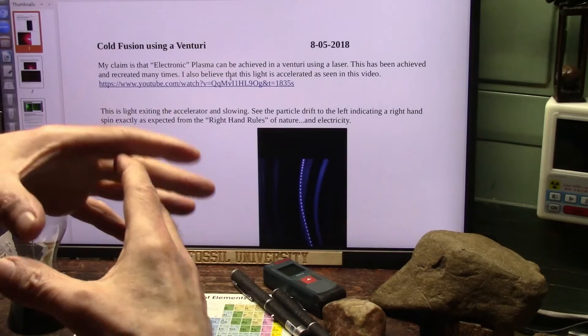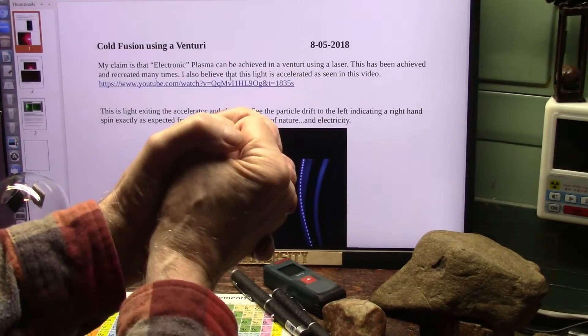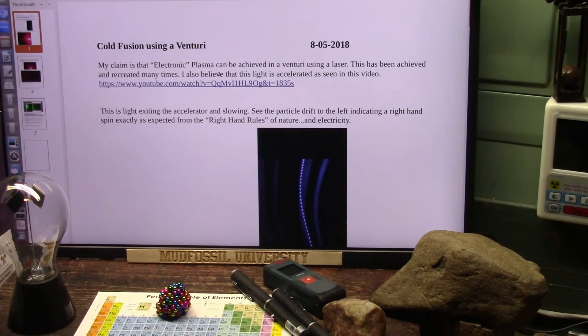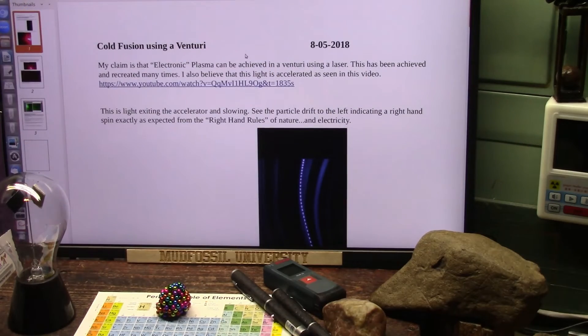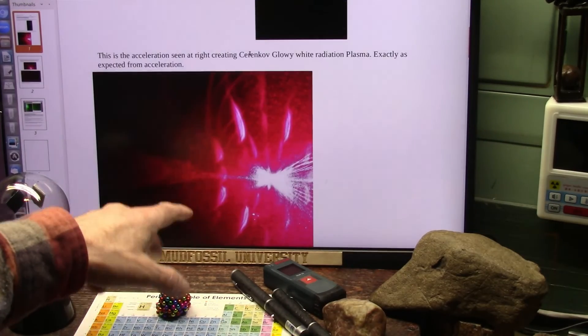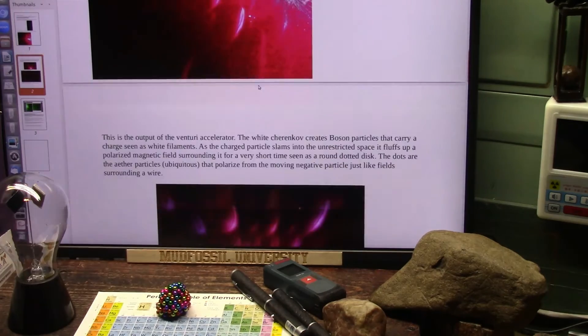Using a Venturi. Fusion means you have to have something split apart and have it come back together and fuse together. Well, if you create fission, when it comes back together, that's fusion. That's what we did. And I show all of the different interactions.